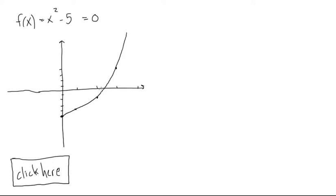This looks like it's somewhere around 1, 2, 3, somewhere around 2.5. So we're going to guess that our x₀ = 2.5. Let's write this down: x₀ = 2.5.